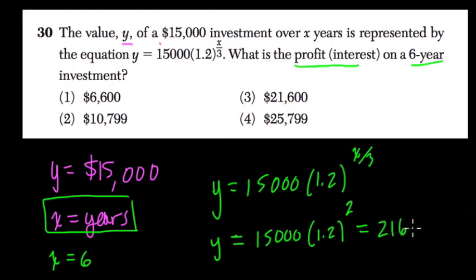Now, be careful. Don't circle $21,600 because what does y represent? Well, that's the value. That's what our bank account is now worth. It was worth $15,000, now it's worth $21,600.